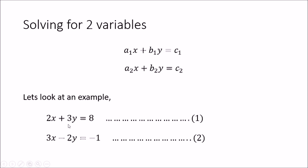Let's look at this example: 2x + 3y = 8 and 3x - 2y = -1. As described, we will remove one variable from both equations so we are left with the other variable and can find its value. To do that, we multiply the first equation by a certain constant and the second equation by another constant, so that the coefficient of either x or y becomes the same in both. Once the coefficients match, we can add or subtract the two equations to eliminate that variable.